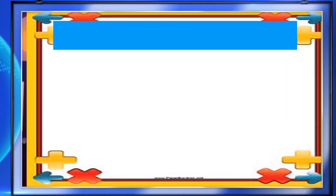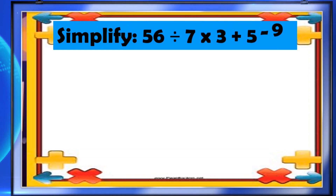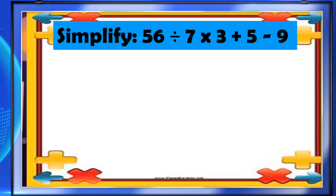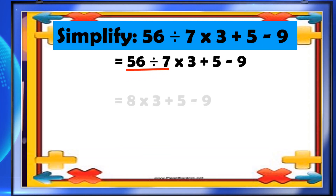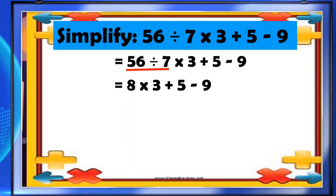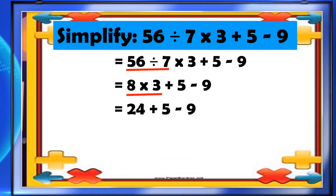And our third example: simplify 56 divided by 7 times 3 plus 5 minus 9. As we can observe, all operations are present in our example. We have to divide first because division appears first from left. So let's divide 56 by 7, and that will give you 8. Then we have 8 times 3 plus 5 minus 9. Second, we have to multiply 8 and 3. Now 8 times 3 equals 24 plus 5 minus 9.